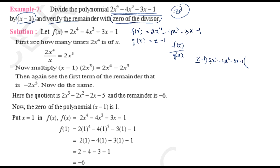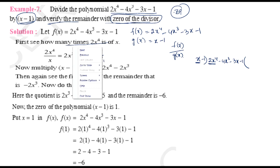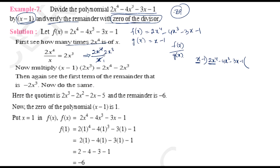First, take the first term of the divisor and the first term of the dividend. We have 2x⁴ divided by x. How many times does x go into 2x⁴? Since there is only 1x in the divisor, dividing 2x⁴ by x gives us 2x³. So the first term of the quotient is 2x³.